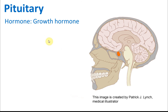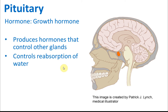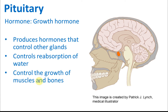The pituitary gland secretes a hormone called the growth hormone, which controls the growth of a person. It also produces hormones that control other glands — for example, it produces hormones to stimulate the adrenal glands, which then secrete other types of hormones to control the actions of the body. It also controls the reabsorption of water and the growth of muscles and bones.